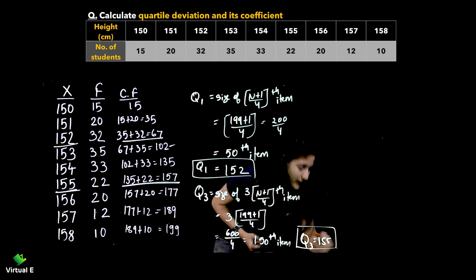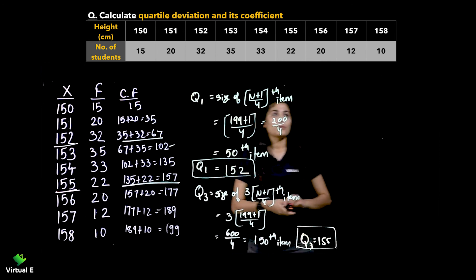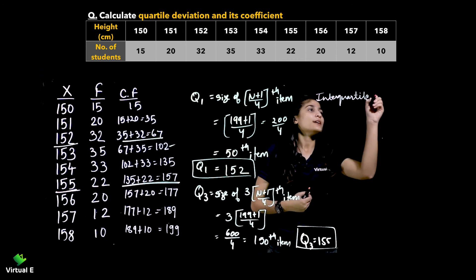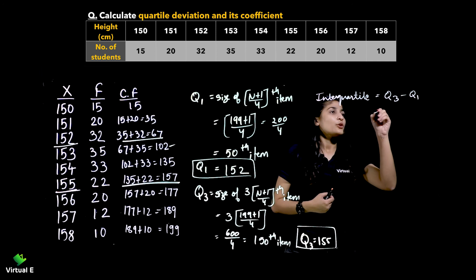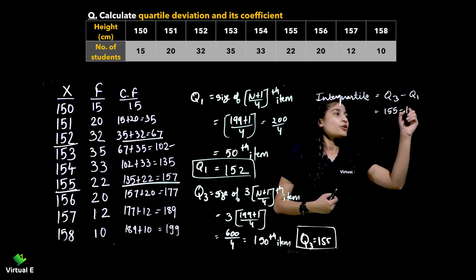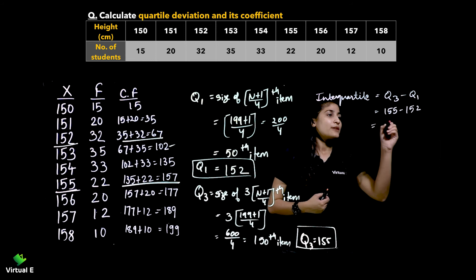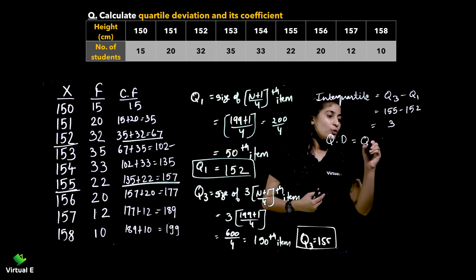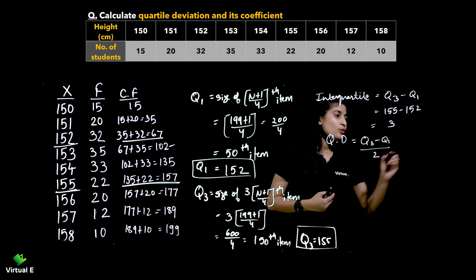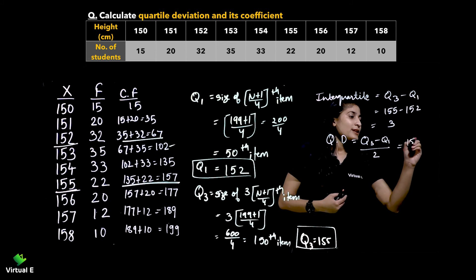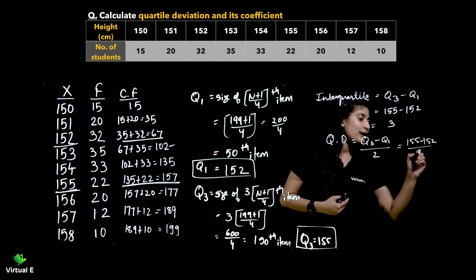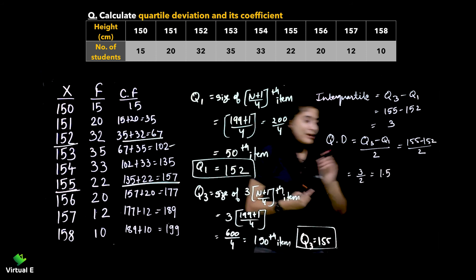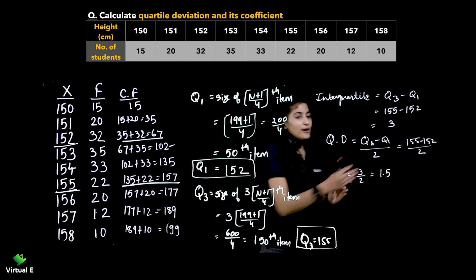Now we have Q1 = 152 and Q3 = 155. First, find the interquartile range: Q3 minus Q1 = 155 minus 152 = 3. Next, find quartile deviation using Q3 minus Q1 divided by 2, which is 155 minus 152 divided by 2 = 3 upon 2. The quartile deviation is 1.5.